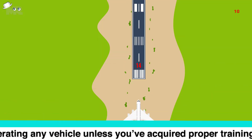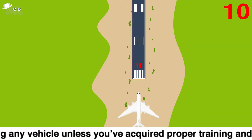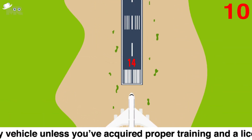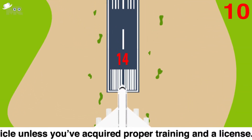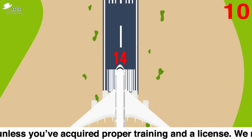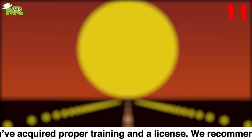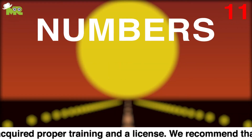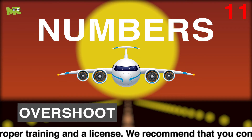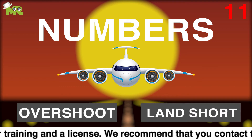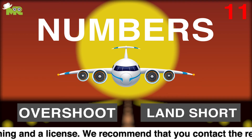Ten, gradually lower your nose and watch the numbers on the runway. Eleven, those numbers will let you know if the airplane is going to overshoot or land short while landing.